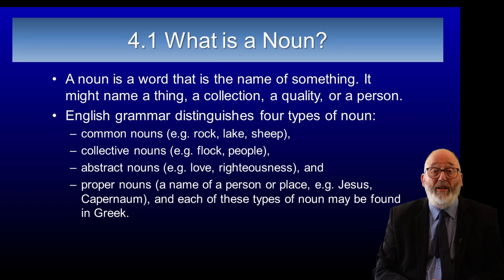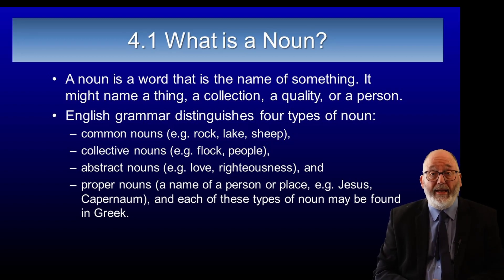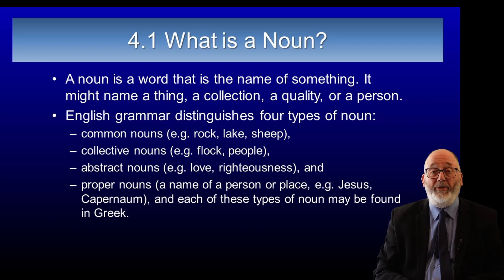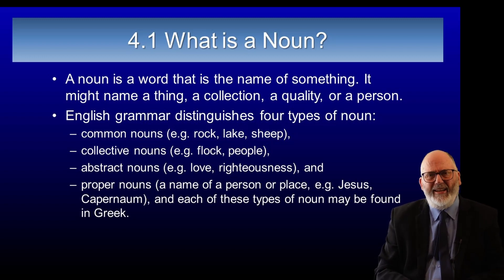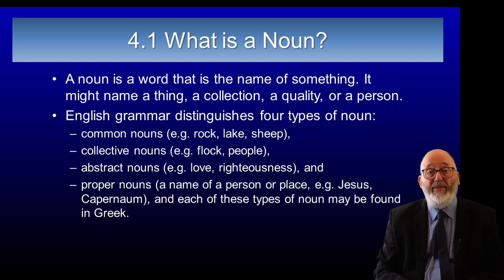Let's begin by asking, what is a noun? Well, the simplest explanation is to say a noun is the name of something. And grammarians, being what they are, have looked at nouns and said there are at least four types of nouns in English.